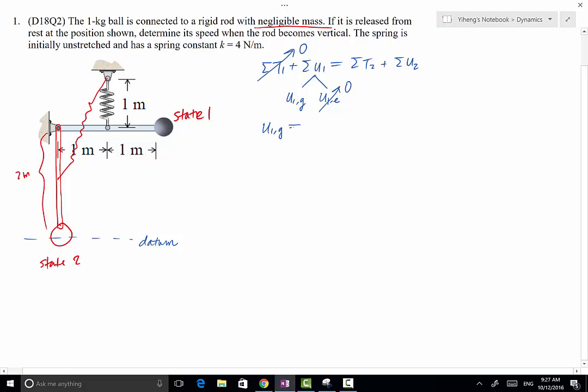U1g equals to weight times the height, the position compared to the datum. So if we've chosen this to be the datum, then U1g equals to 1, which is the mass 1 kg times 9.81. That gives you the weight, times the position is 2 meters above the datum, and that equals to 19.62 joules. That's the total potential energy at state 1 for this ball.